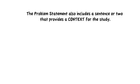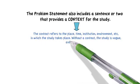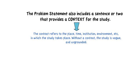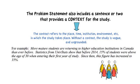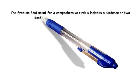The problem statement also includes a sentence or two that provides a context for the study. The context provides details about where this takes place, at what time, and what are the key elements of this particular project. Without a context, the study isn't grounded and becomes quite vague. For example: more mature students are returning to higher education institutions in Canada than ever before. When you describe the context, you're providing background and grounding the research.